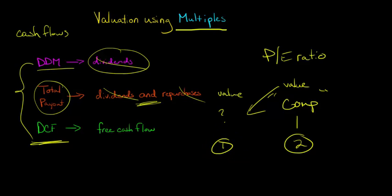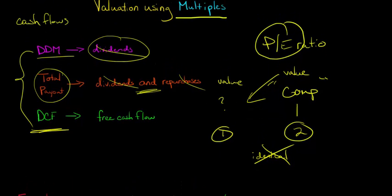Now you might say there are no two firms that are going to be identical — they're not going to be exactly alike, otherwise they wouldn't both exist. So what we can do is use some kind of multiple that tries to factor in size differences — we take the price and scale it up by earnings. Or maybe we use an enterprise value multiple that takes into consideration leverage and firms' borrowing decisions. But basically we're just trying to use that multiple to value the firm instead of relying on cash flows.